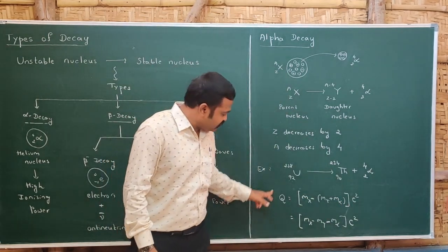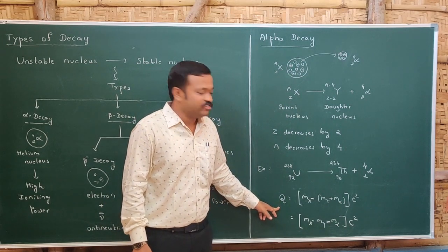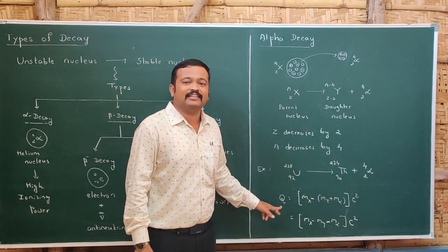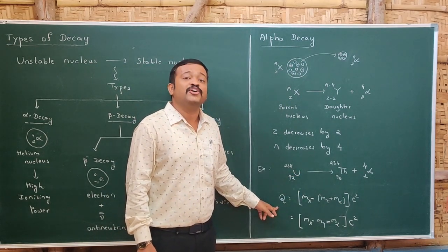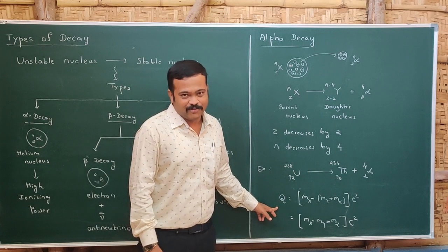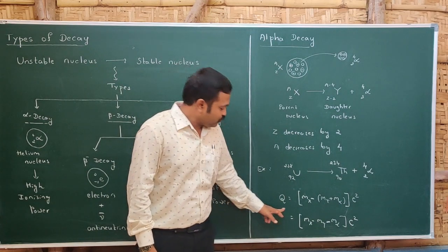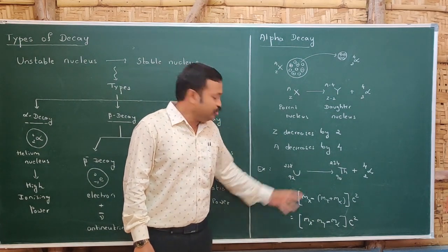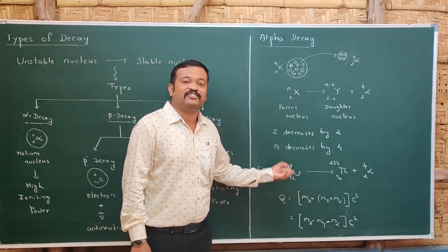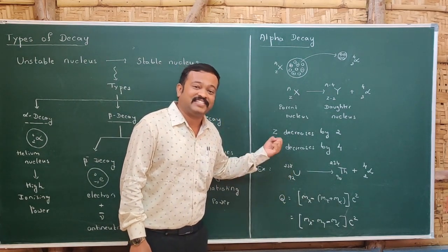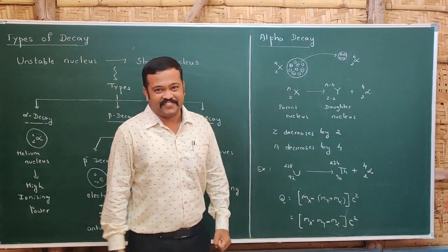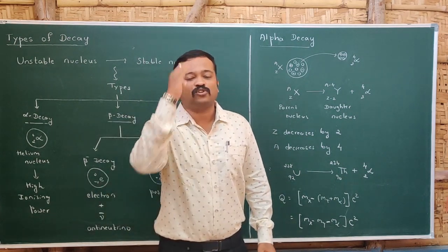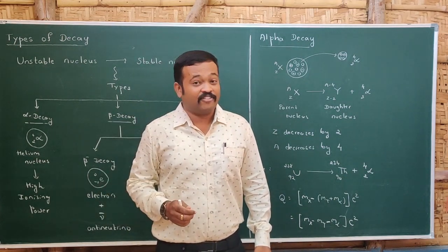The energy released during this reaction is called the Q value. This Q value is released due to the mass defect that arises in the reaction. This was all about alpha decay.